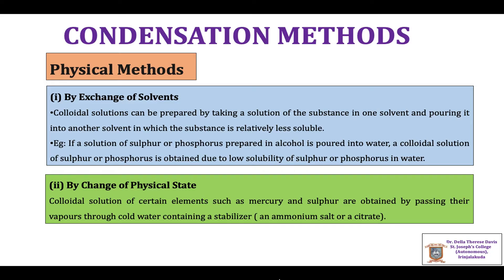Next is the change of physical state. The colloidal solution of certain elements such as mercury and sulfur are obtained by passing their vapors through cold water containing a stabilizing agent such as an ammonium salt or citrate. The vapors condense in the cold water to form the colloid of mercury or sulfur in water. These are the two physical methods for the preparation of lyophobic sols.